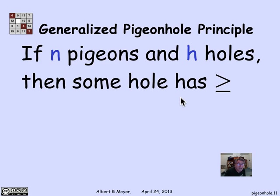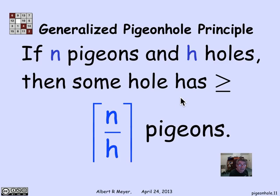More generally, if I have n pigeons, and I'm going to be assigning pigeons to unique holes, and if I have h holes, then some hole has to have n divided by h rounded up. Again, n divided by h can be understood as the average number of pigeons per hole.